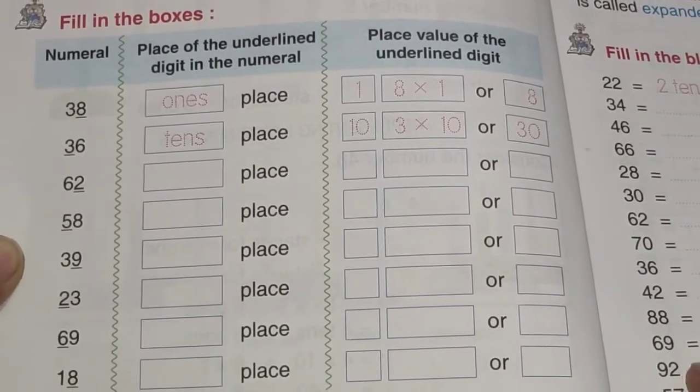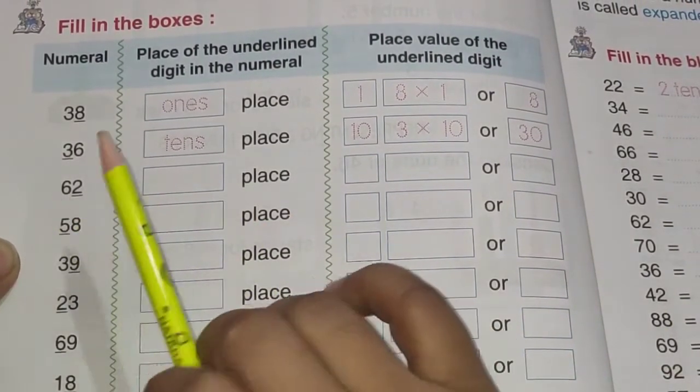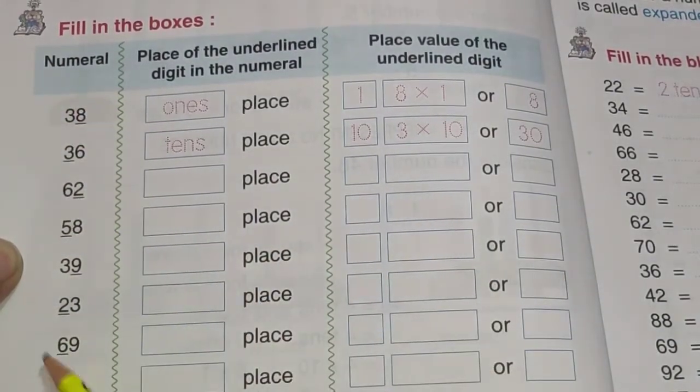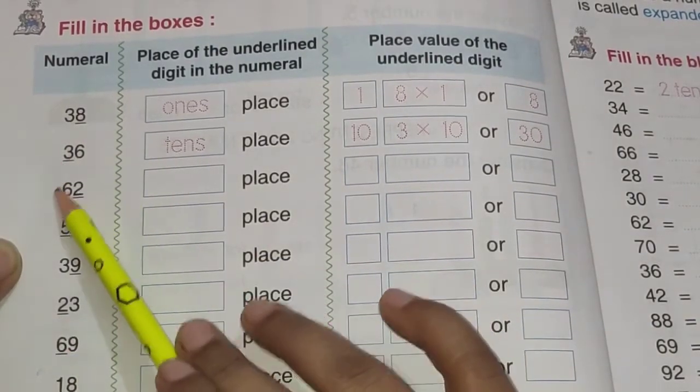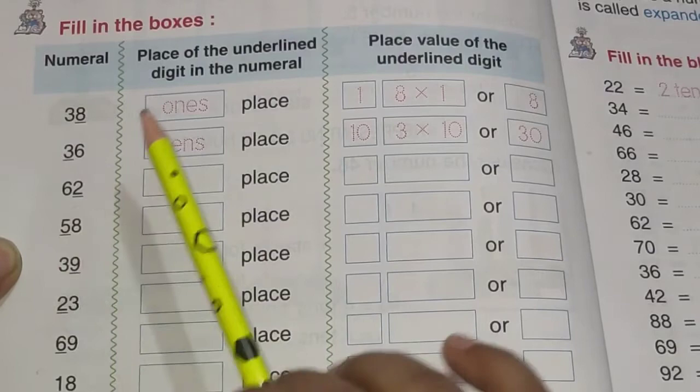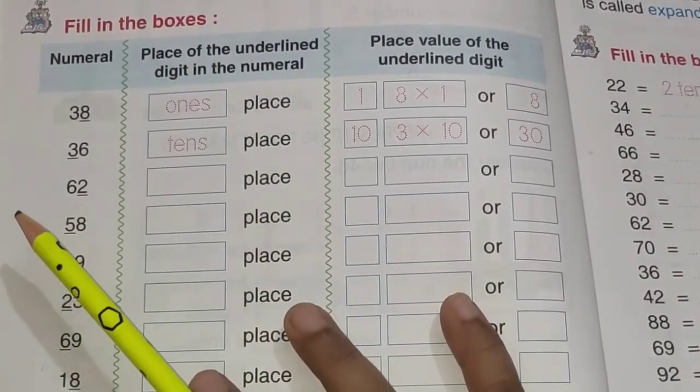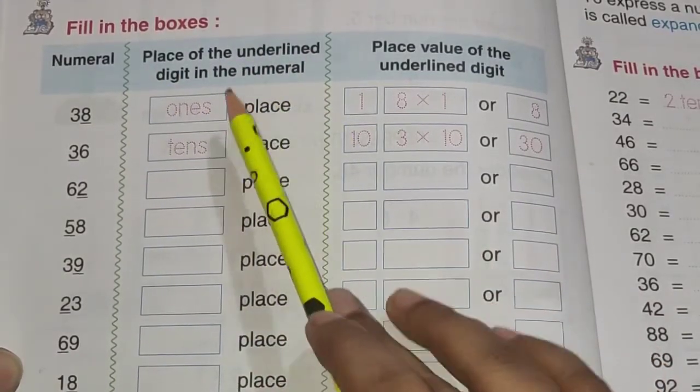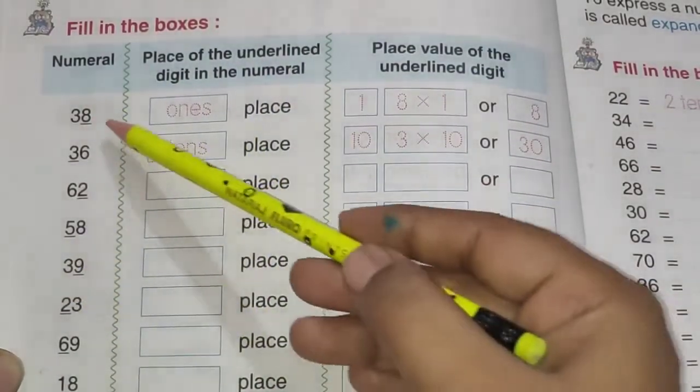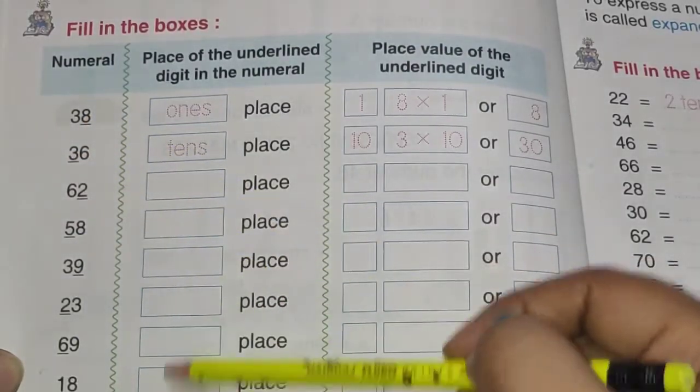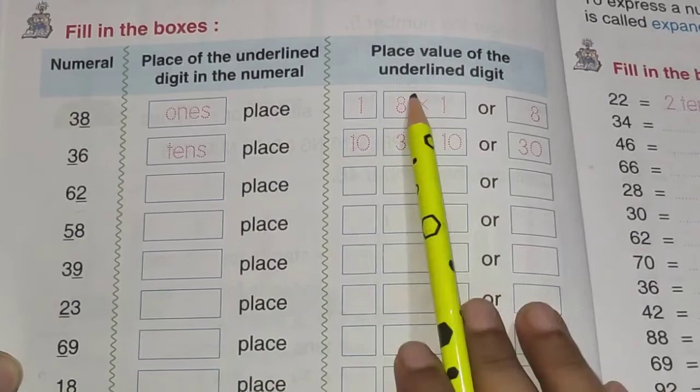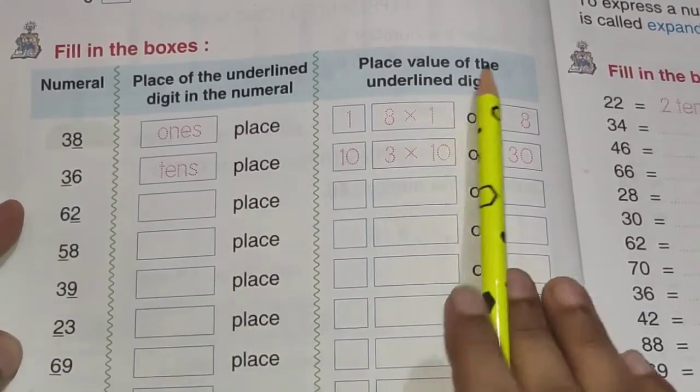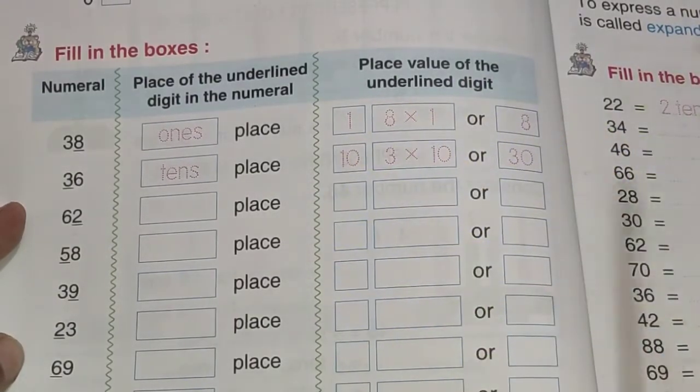Now, your next question. That is fill in the boxes. Aapko in boxes ko fill karna hai. In this column, we have numeral. Numeral means numbers. Hamare paas numbers hai aur woh underlined hai. Numbers mein digits hai jo underlined hai. Then, in the second column, place of the underlined digit in the numeral. Aapko us number ki, jo bhi number mein digit underlined hai. Us ki yaha par place value likhni hai. Ki woh kis place pe hai. Aur is column mein, the last column, you will write place value of the underlined digit. Aur yaha par aapko place value likhni hai.